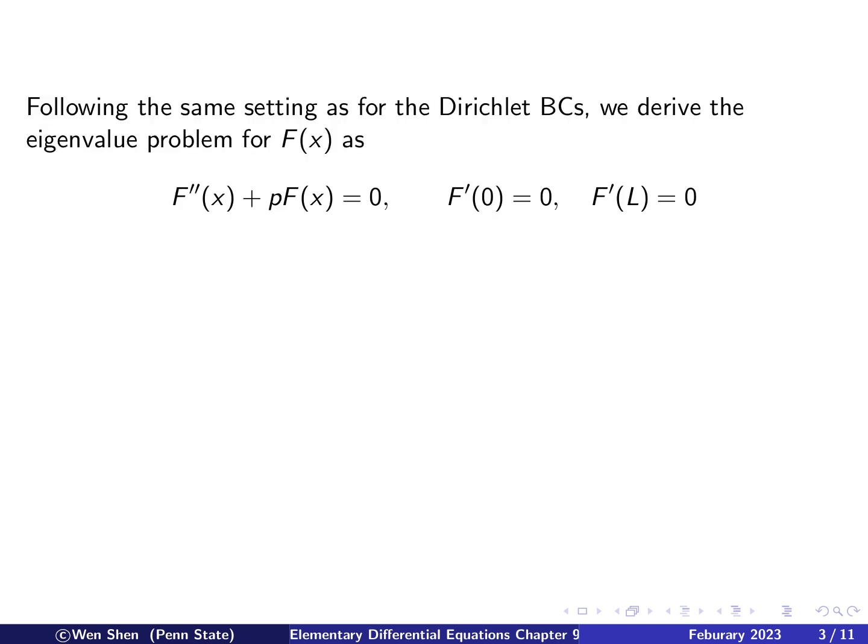So here I will be a little bit brief, because the procedure here would be basically the same as what we have done for the Dirichlet boundary conditions. We will separate the variables and we will derive eigenvalue problems for the function f that only depend on x and then later to solve the one g that only depend on t.